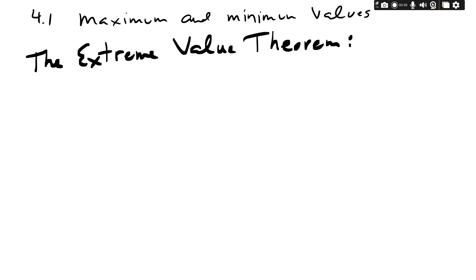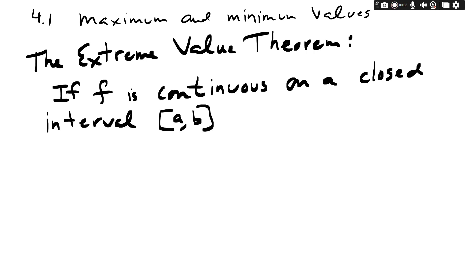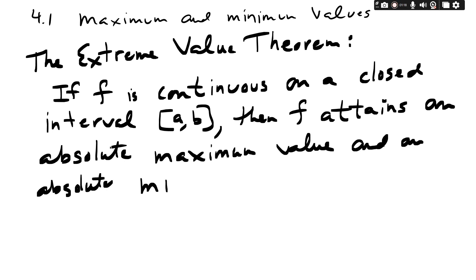Here it is: if you have a function f that is continuous — meaning no breaks in the graph — and it is on a closed interval from a to b, starting at a and ending at b along the x-axis, then f must attain an absolute maximum value and an absolute minimum value. There is no other way around it.